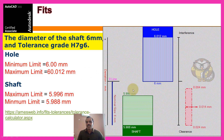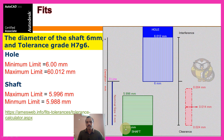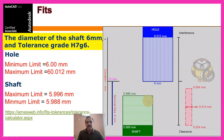Graphical representation of hole and shaft: hole size is 6 to 6.012. Shaft size is 5.996 to 5.988. This arrangement indicates the fit type — clearance fit, interference fit, or transition fit. This is a clearance fit.